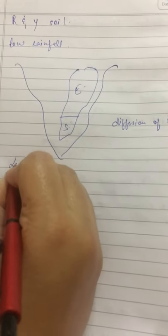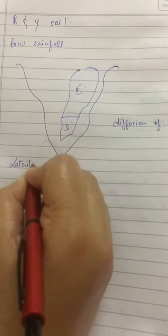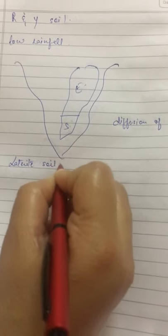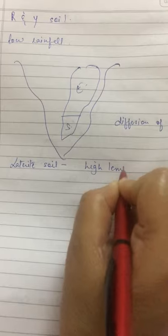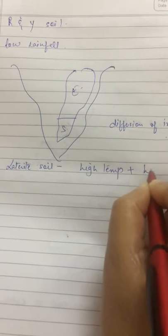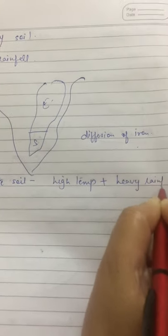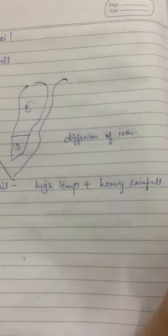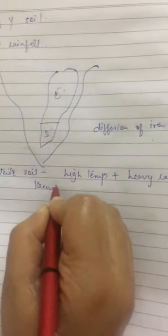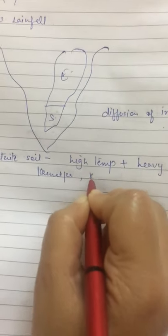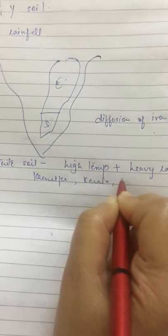Number 4 is Laterite soil. Laterite soil is found in areas of high temperature and heavy rainfall and these are found in Karnataka, Kerala and Tamil Nadu.